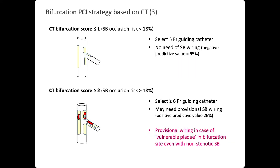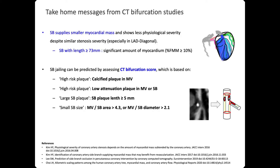If the CT bifurcation score is 0 or 1, the risk of side branch occlusion is not so high, so you can use a 5 French guiding catheter and there is no need for side branch wiring. If the CT bifurcation score is 2 or higher, you may need a 6 French guiding catheter and may also need provisional side branch wiring, even if the side branch is not so critical. Take-home messages: the side branch supplies smaller myocardial mass and shows less physiological severity despite similar stenosis — especially in LAD-diagonal bifurcations. A side branch length of more than 73mm means a significant amount of myocardium — please respect it. Side branch jailing can be predicted by assessing the CT bifurcation score based on ugly plaque or large amounts of bifurcation plaque.